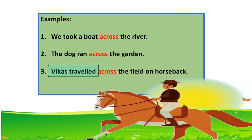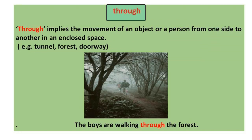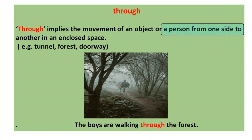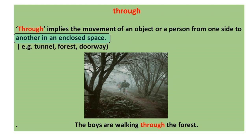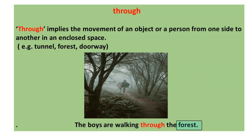He traveled across the field on horseback. The next preposition is 'through'. The preposition 'through' implies the movement of an object or a person from one side to another in an enclosed space — for example, a tunnel, forest, or doorway. Now look at the picture — in this, the boys are walking through the forest, and a forest is an enclosed space.